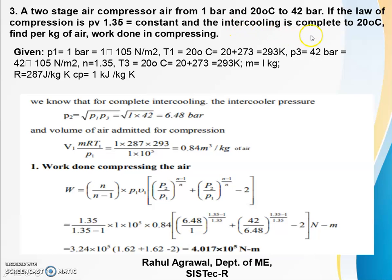Third numerical: Two-stage air compressor with complete intercooling. Given: P1=1 bar at 20°C, P3=42 bar, n=1.35, T3=20°C after intercooling, m=1kg, R=287 J/kg·K. For complete intercooling, P2 = √(P1×P3) = √(1×42) = 6.48 bar. Using two-stage formula: W = (n)/(n-1) P1V1 [(P2/P1)^(n-1)/n + (P3/P2)^(n-1)/n - 2]. Substituting values: (1.35)/(0.35) × 1×10^5 × 0.84 [(6.48/1)^(1.35-1)/1.35 + (42/6.48)^(1.35-1)/1.35 - 2] = 4.017×10^5 N-m.